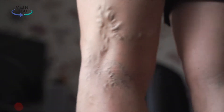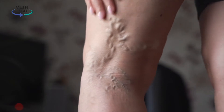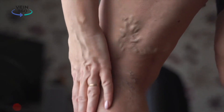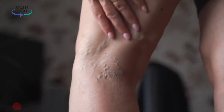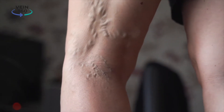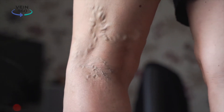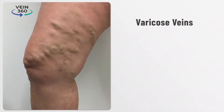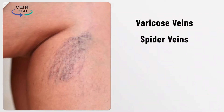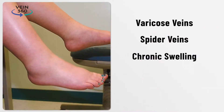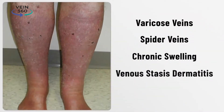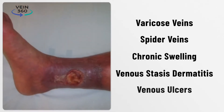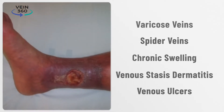Venous reflux occurs when blood in the superficial veins goes in the wrong direction. This is the most common cause of varicose veins, spider veins, chronic swelling, venous stasis dermatitis, and even venous ulcers.